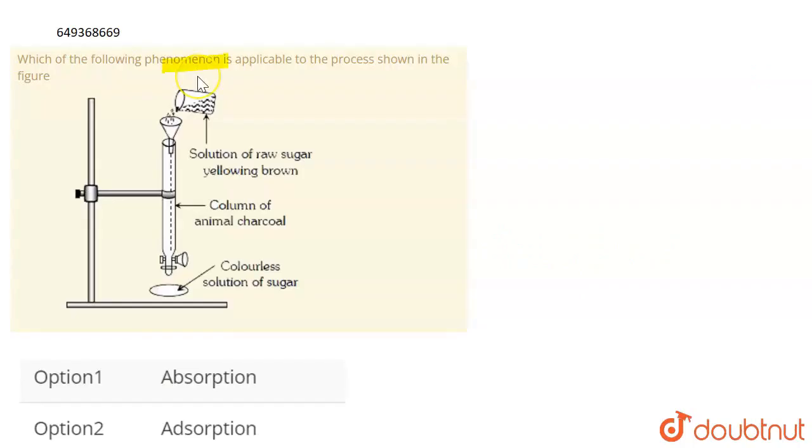Which of the following phenomena is applicable to the process shown in the figure? What is this figure? You have an animal charcoal column here. You have a raw sugar solution that is yellowish brown color. Here you will see the colorless solution of sugar.